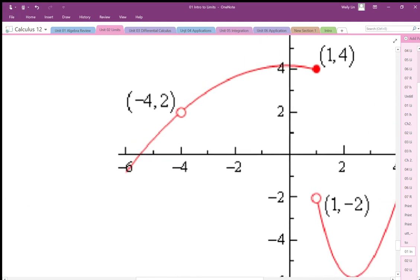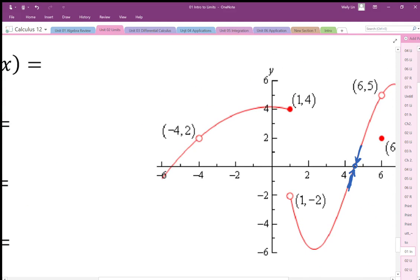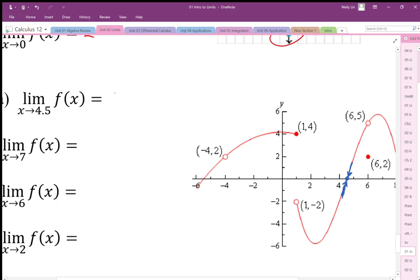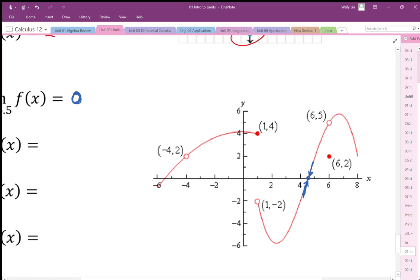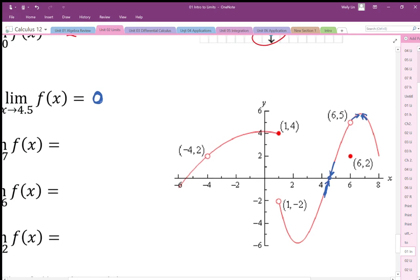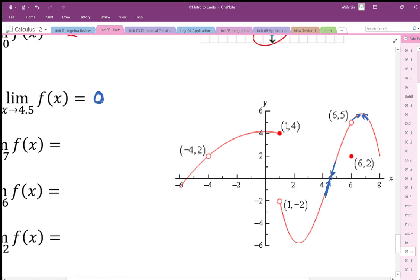In fact, it hits 0. But again, the fact that it gets to 0 is not relevant. It just looks like it's headed towards 0, so that's our limit. Okay, so x goes to 7. It looks like it's headed towards this high point up here. It looks like it's headed towards, let's say, 6.